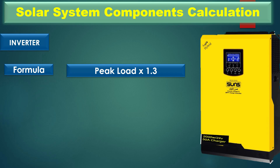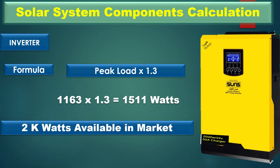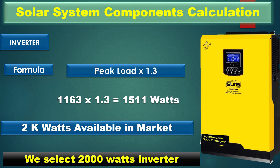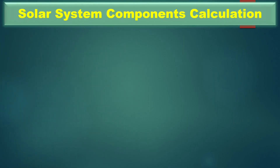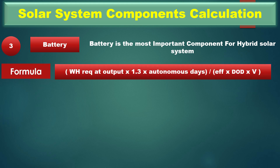The second calculation is the inverter. The inverter formula is: peak load multiplied by 1.3. Putting the values in: 1163 multiplied by 1.3 gives 1511 watts. But sometimes a 1511-watt inverter is not available in the market, so the best choice is to select a 2000-watt inverter.